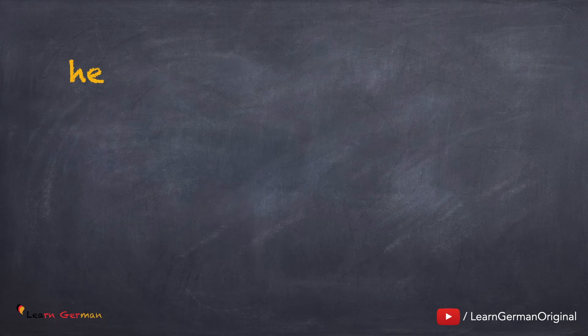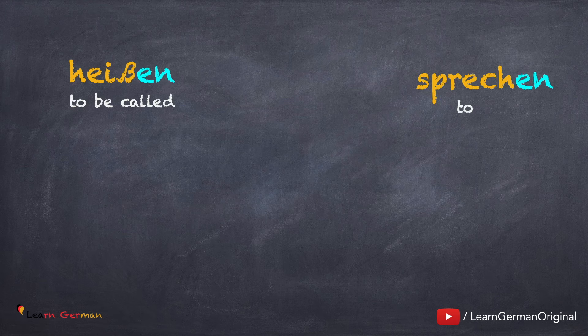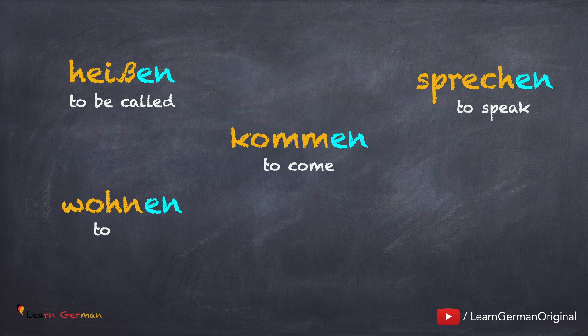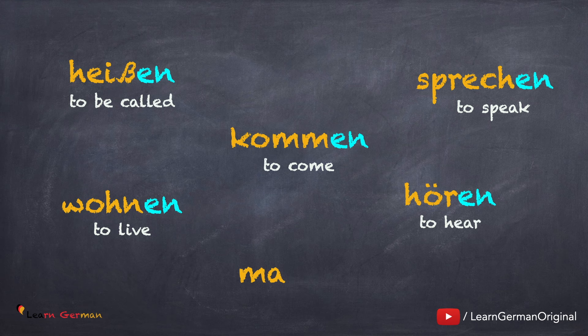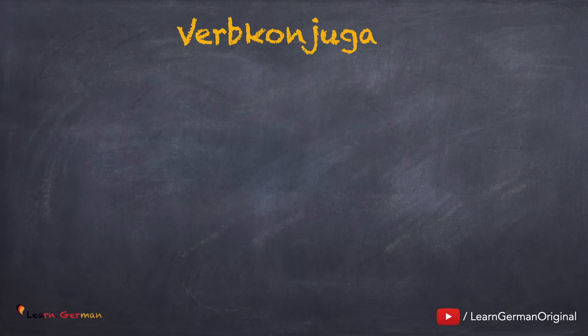Here are some more verbs in their infinitive forms that you already know: heißen, sprechen, kommen, wohnen, hören, machen. The best way to remember a verb is to remember its infinitive form. However, when we make a sentence, the verb has to be conjugated.